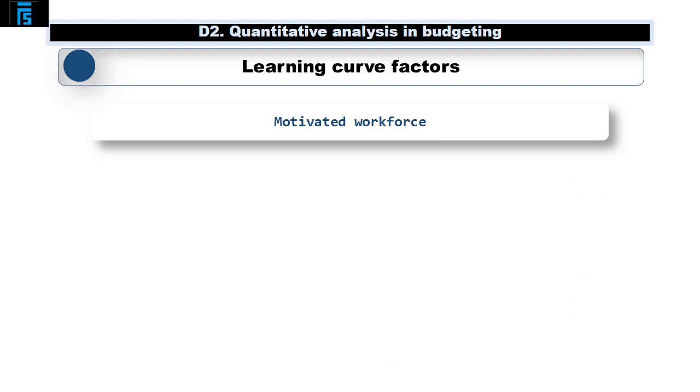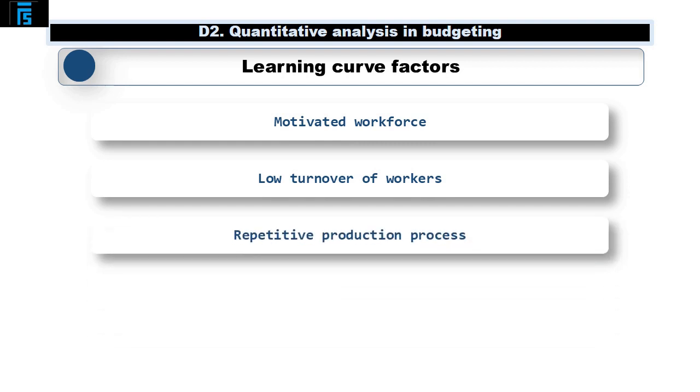A motivated workforce who are keen to work at a fast pace and are keen to learn. And there needs to be a low turnover of workers as well, so that each of the workers have time to learn the process and then speed up. If the workers on the production line are continually changing, there is constant training needed and therefore the learning curve effect will be minimal. The production process itself must be a repetitive one. Clearly, if the process keeps changing, then the employees continually have more to learn and the learning curve effect is massively diminished.